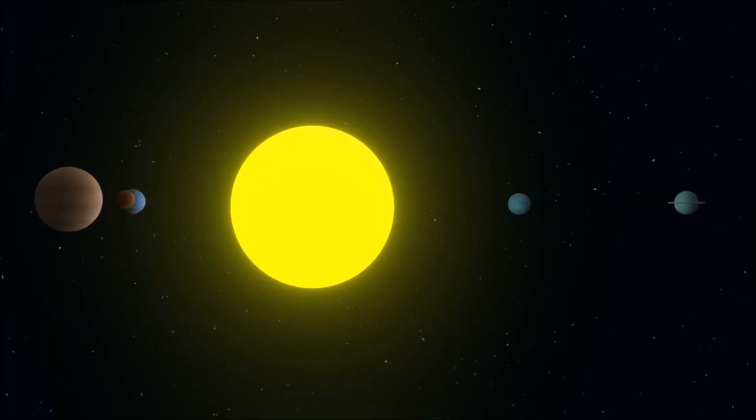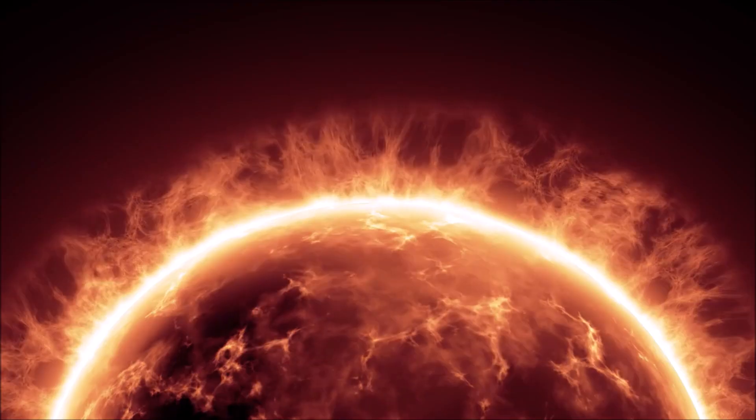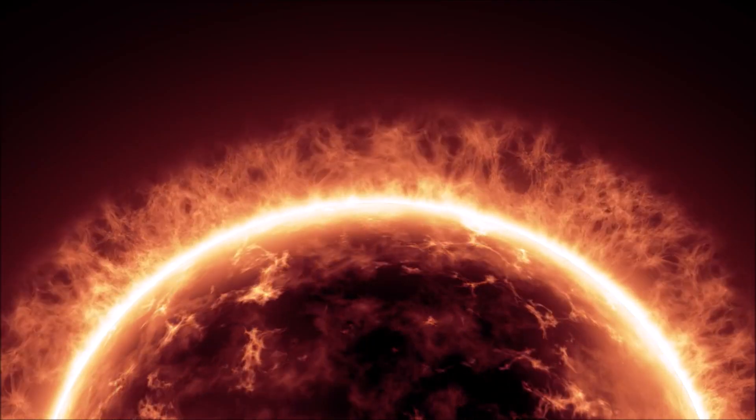It takes the Sun about 25.4 days to rotate once on its axis. The Sun's magnetic field flips every 11 years.